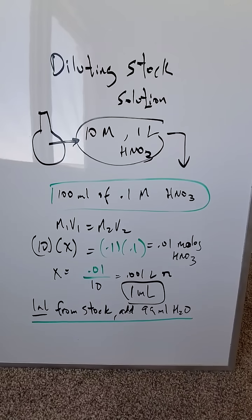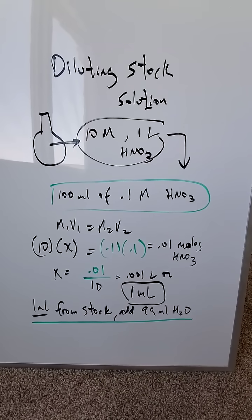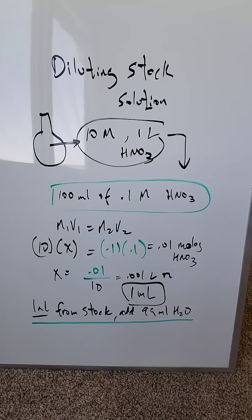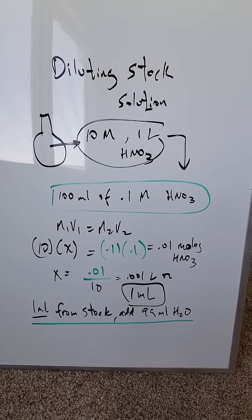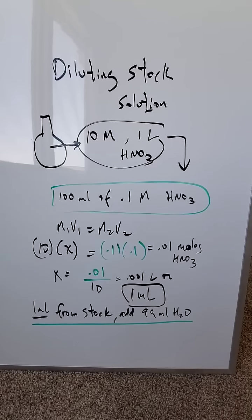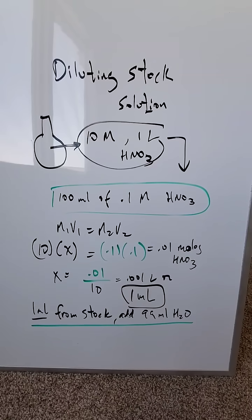Think about that formula: M1V1 equals M2V2. Look at what you need in terms of liters: 0.1 molars times 0.1 liters equals 0.01 moles of nitric acid. That is what you need.